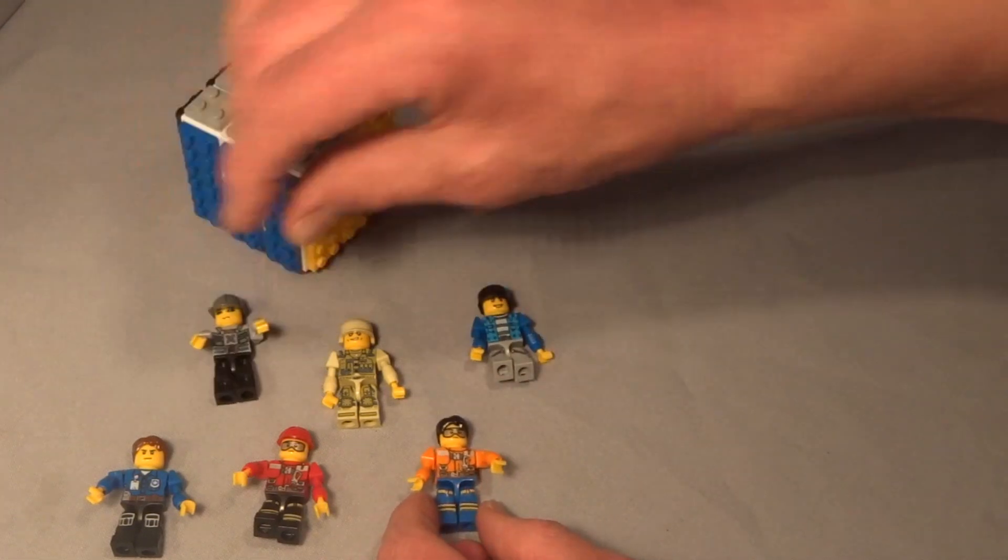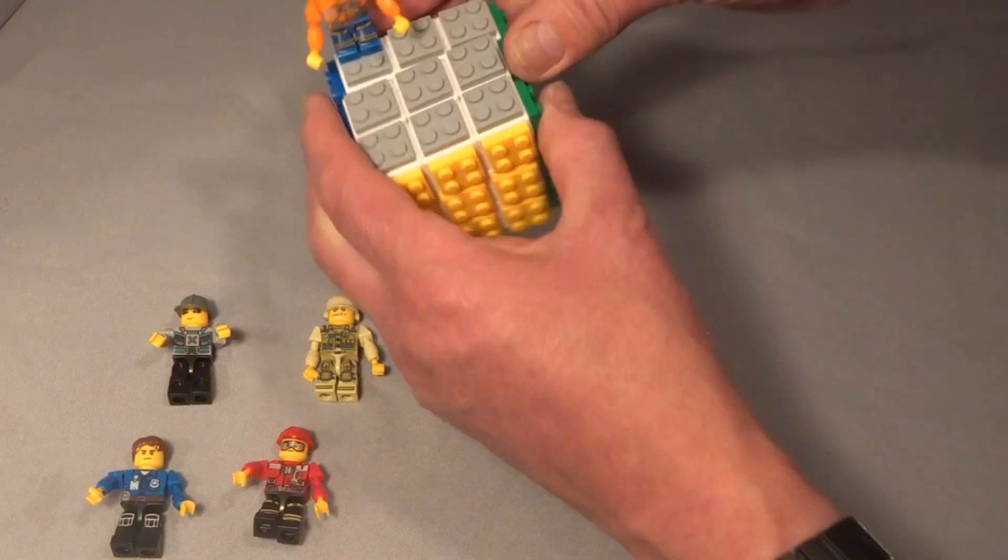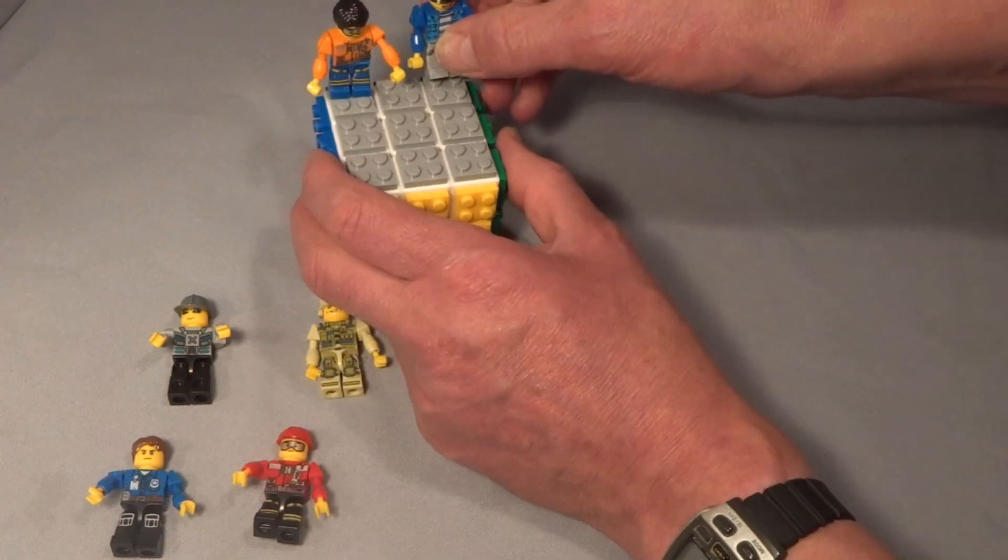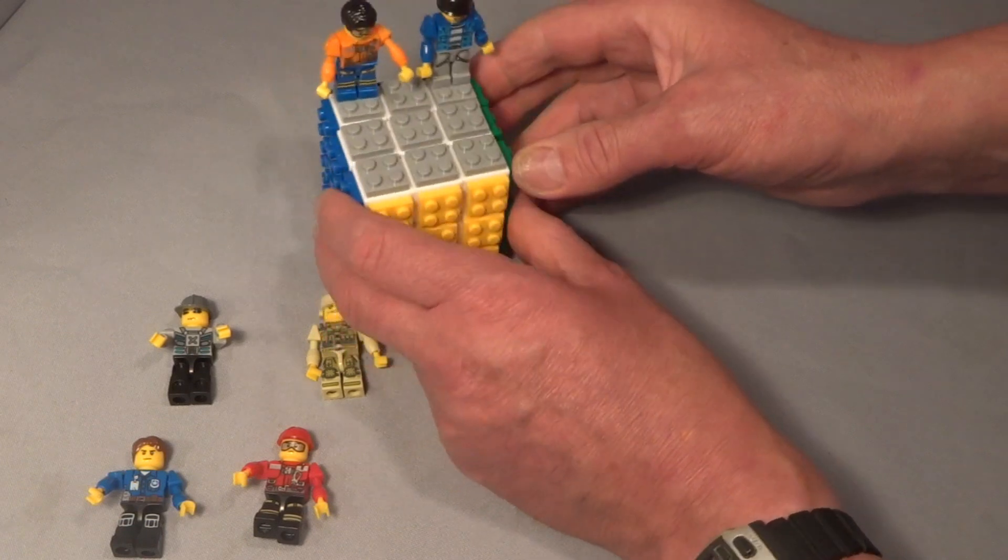I really have no idea what the point of these characters are, or what you do with them. They obviously snap onto the cube, but I don't see the point. It's not as if they can span cubies and create bandaging. I guess it's just for kids to play with.